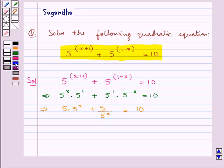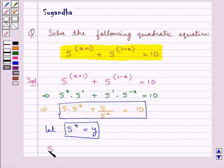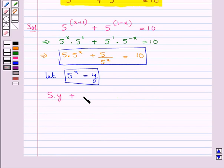Now we take a substitution: let 5 to the power x be equal to y. Putting 5 to the power x equal to y in this equation, we get 5 into y plus 5 upon y is equal to 10.